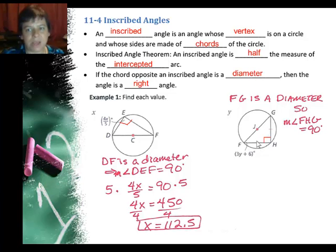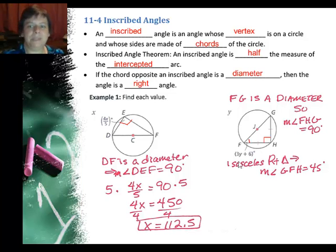But I also know these two legs are isosceles. Well there's only one isosceles right triangle, it's a 45-45-90. So since it's an isosceles right triangle, this angle right here has to be 45 degrees. So I'm going to set this value here equal to 45 and solve for Y.